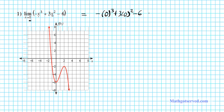When we evaluate this using the order of operations we're going to have zero plus zero minus six, and your final answer is negative six.